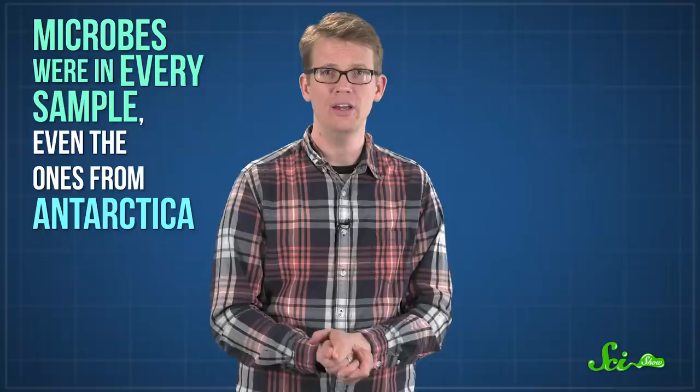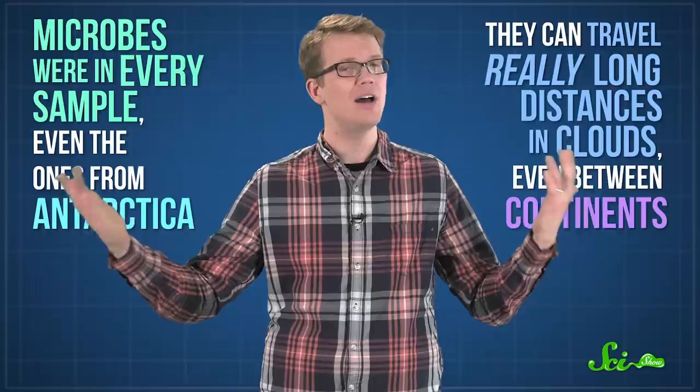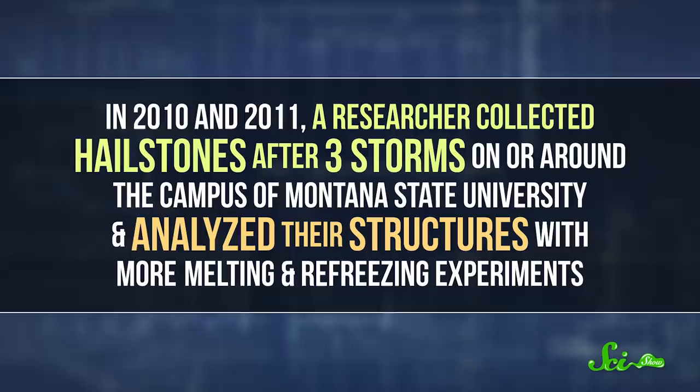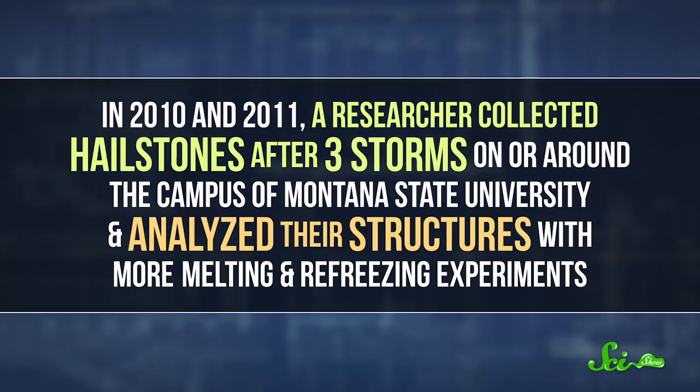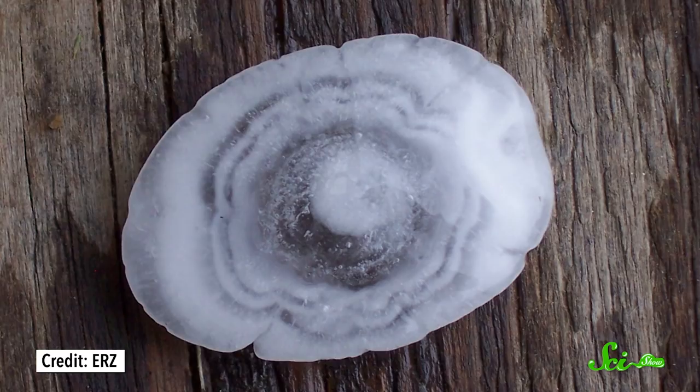In 2010 and 2011, a researcher collected hailstones after three storms on or around the campus of Montana State University, and analyzed their structures with more melting and refreezing experiments. He found lots of bacteria in the hailstones' cores, thousands per milliliter of meltwater, but almost none in the outer layers. In other words, it looked like bacteria were the seeds that got the hailstones forming.